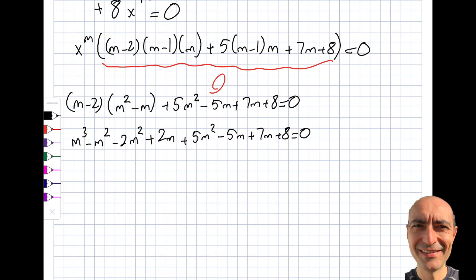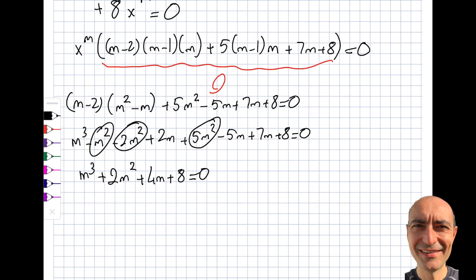Collecting like terms: m³ stays. For m²: −1−2+5 = +2, so +2m². For m: +2−5+7 = +4, so +4m. And 8 stays. So I get m³ + 2m² + 4m + 8 = 0.